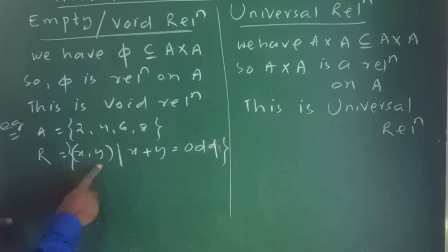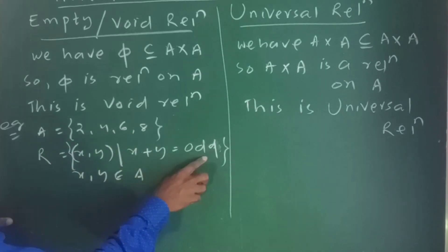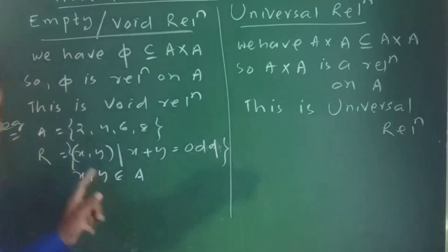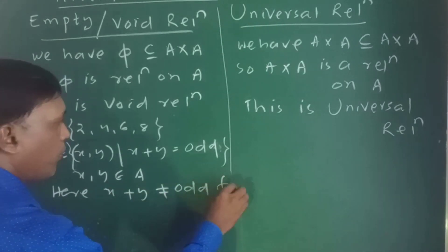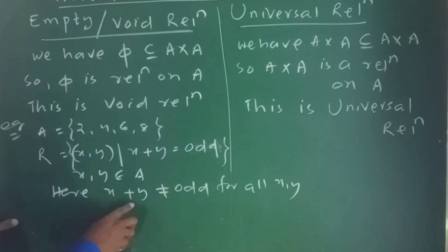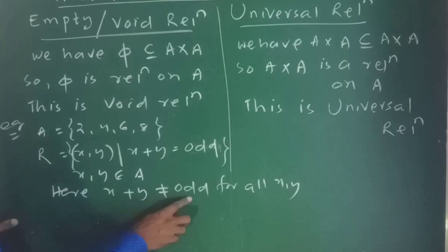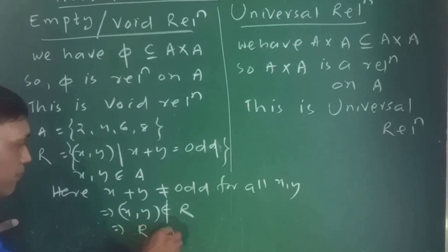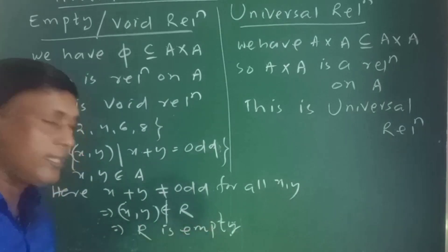Example: A = {2,4,6,8}. R = {(x,y) | x + y = R (an odd number), x,y ∈ A}. But all elements of A are even, and the sum of any two even numbers is even, not odd. So we cannot find any (x,y) where the sum equals an odd number. Therefore R is empty — this is an example of a void (empty) relation.